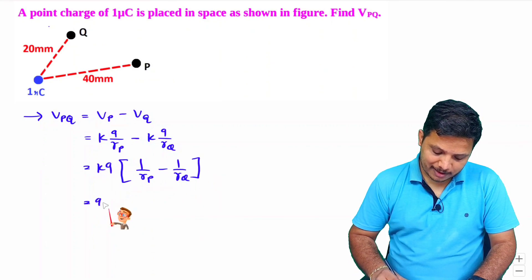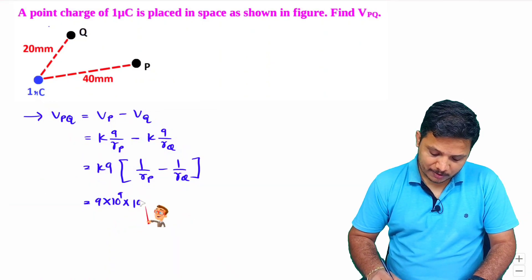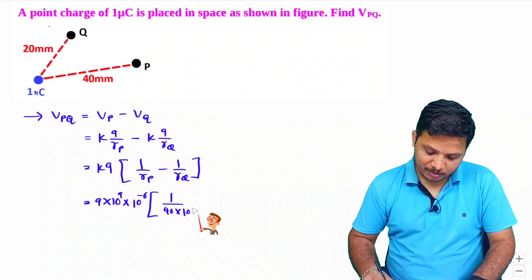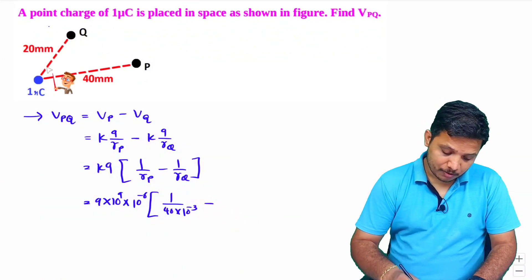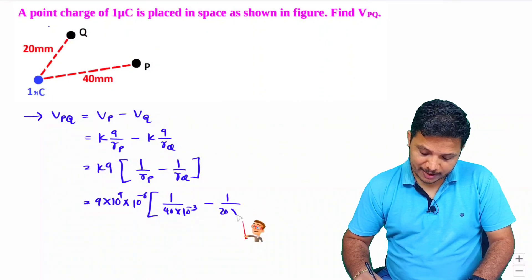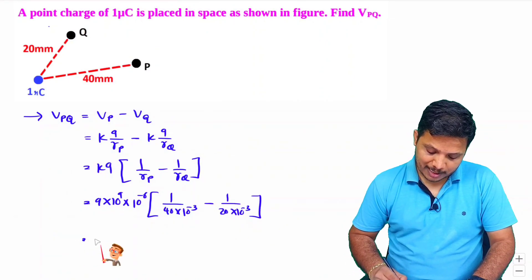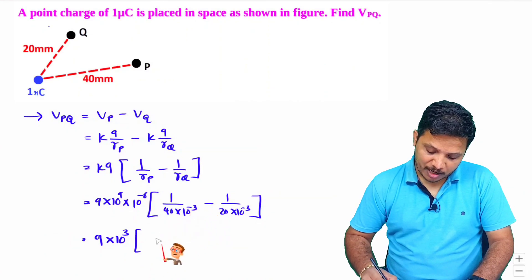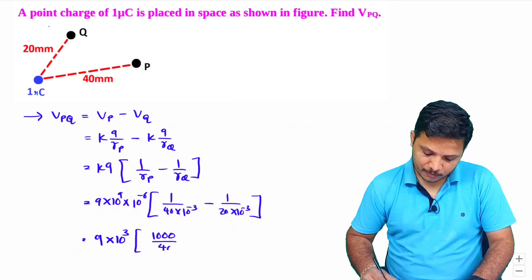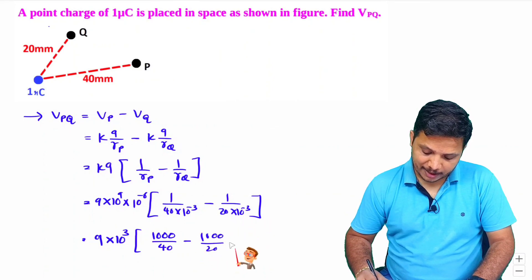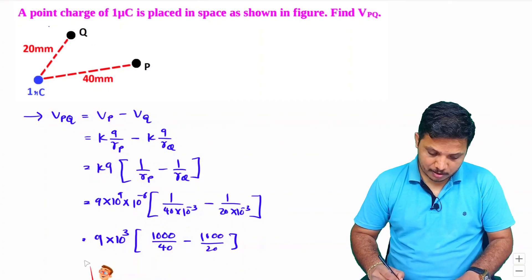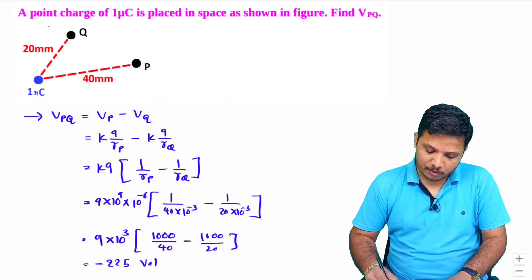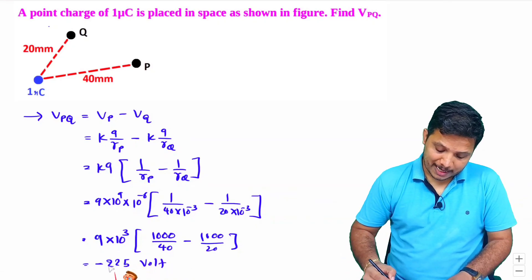Now K is 9×10⁹, Q is 1 microcoulomb (10⁻⁶), RP is 40 mm (40×10⁻³), and RQ is 20 mm (20×10⁻³). Simplifying: 9×10³ times (1000/40 minus 1000/20), which gives 9×10³ times (25 minus 50), resulting in VPQ equal to minus 225 volts.